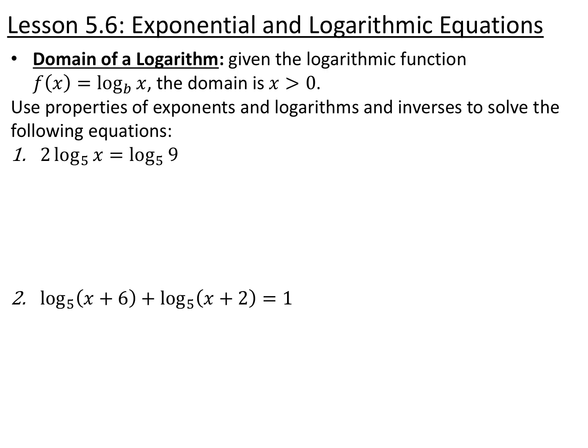Looking at this first equation, we have 2 log base 5 of x is equal to log base 5 of 9. We're going to start with the same idea: if we have two logarithms on either side of the equation with the same base, the insides must be equal to each other. So I use the rule that a number in front can be an exponent inside the logarithm, giving me log base 5 of x squared is equal to log base 5 of 9.